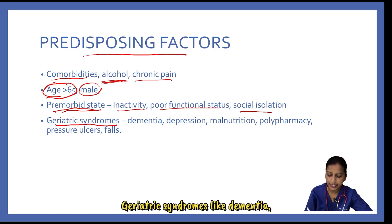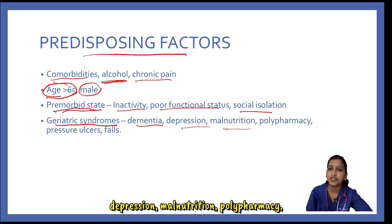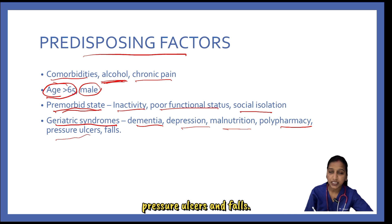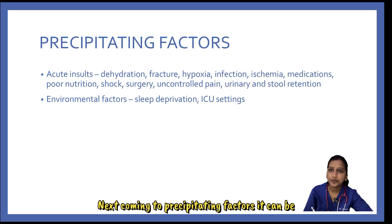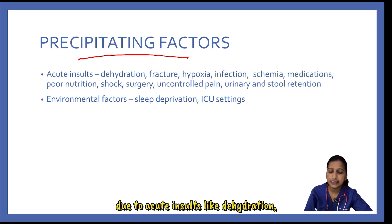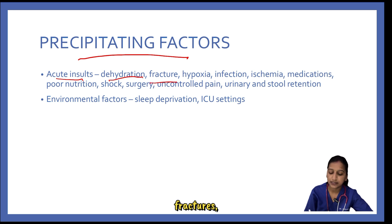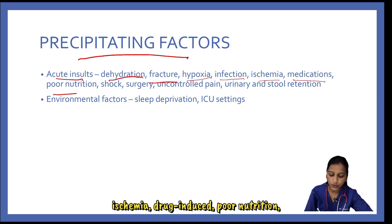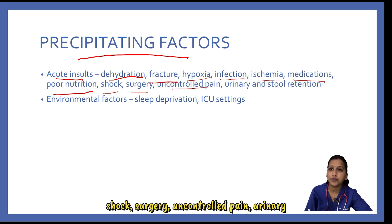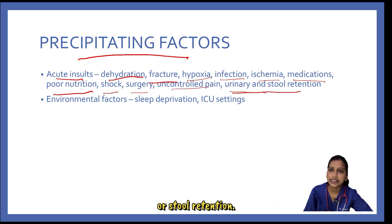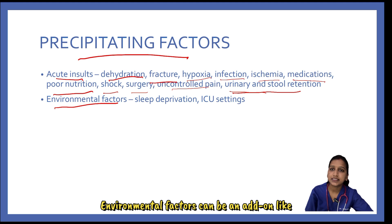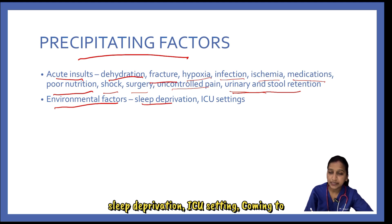Geriatric syndromes like dementia, depression, malnutrition, polypharmacy, pressure ulcers, and falls are also predisposing factors. Precipitating factors can be due to acute insults like dehydration, fractures, hypoxia, infection, ischemia, drug-induced causes, poor nutrition, shock, surgery, uncontrolled pain, and urinary or stool retention. Environmental factors can be an add-on, like sleep deprivation and ICU settings.